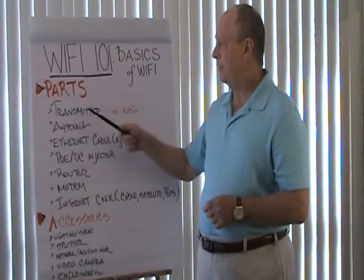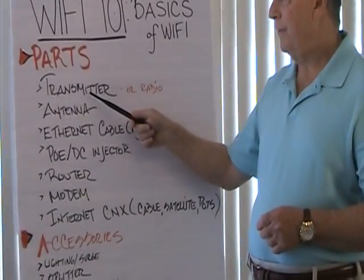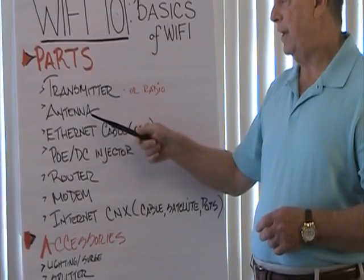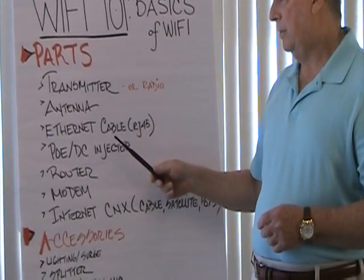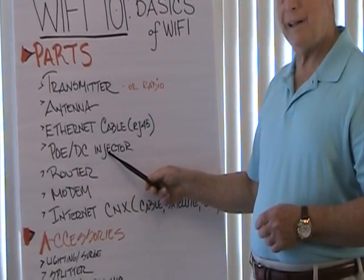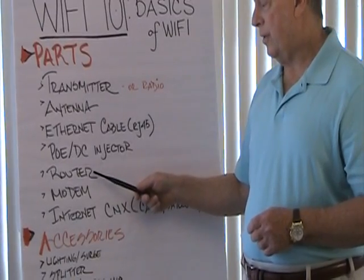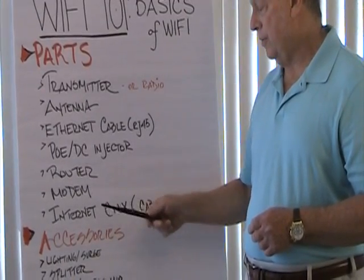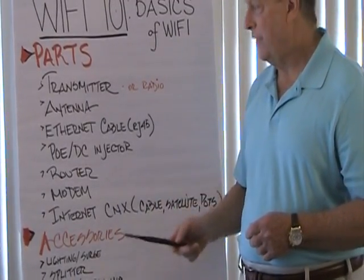We'll start with parts. The parts are a transmitter, an antenna, an ethernet cable, a power over ethernet or DC injector, a router, a modem, and an internet connection.